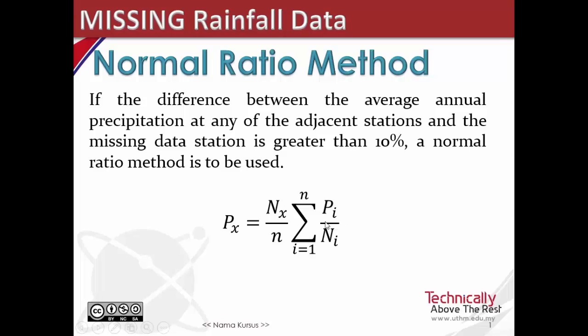Pi is the estimated daily precipitation at the adjacent stations, and Ni is the average annual precipitation at the adjacent sites.